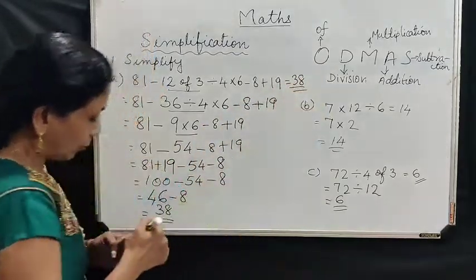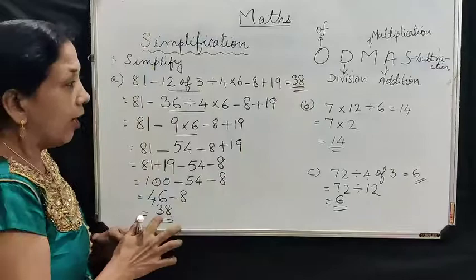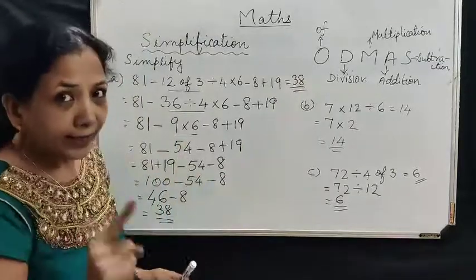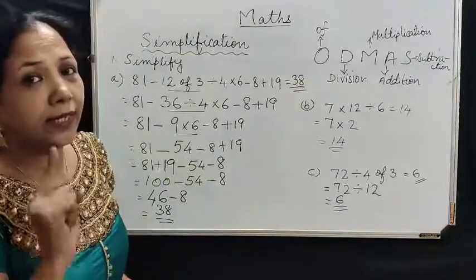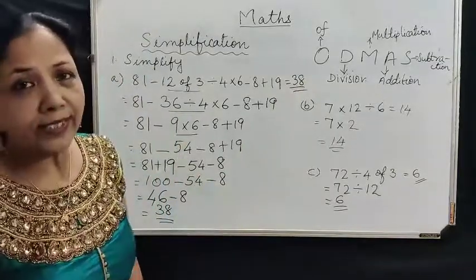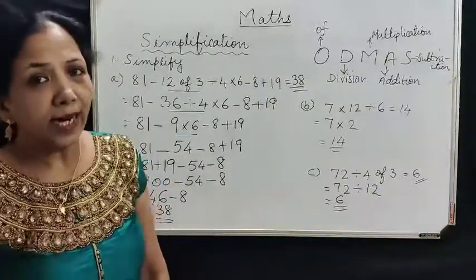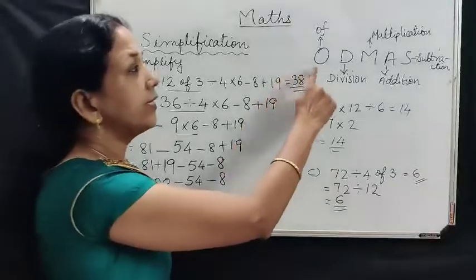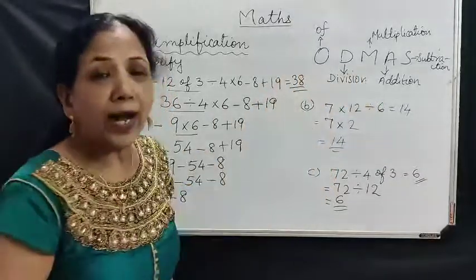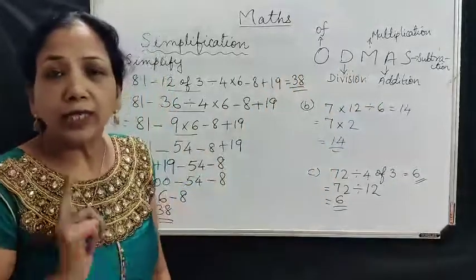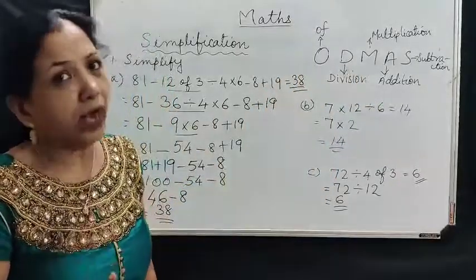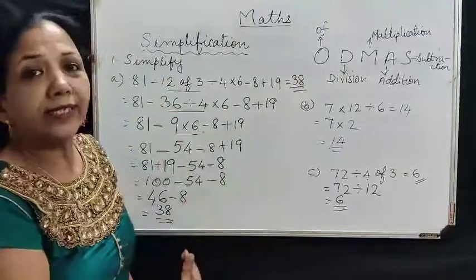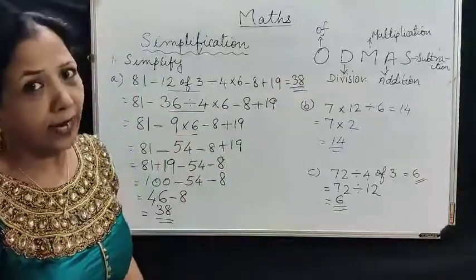Is it clear how to do it? First 'of', then division, then multiplication, then addition, then subtraction — that is ODMAS. You should learn ODMAS, and then you will get the correct answer.